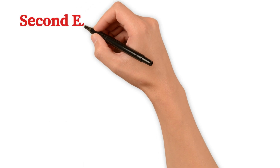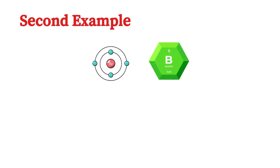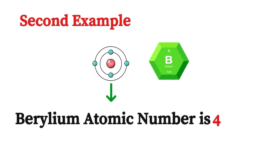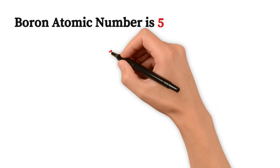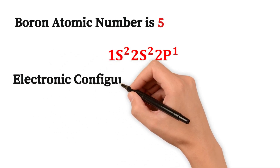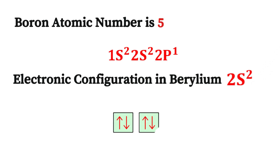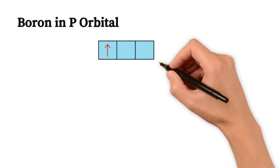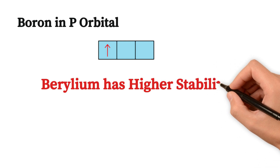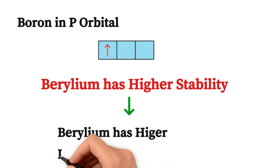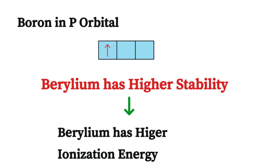The second example is beryllium and boron. Beryllium has atomic number 4 with configuration 1s2 2s2, whereas boron has atomic number 5 with configuration 1s2 2s2 2p1. In beryllium, the 2s sub-shell is completely filled, which is a stable configuration. In boron, the p orbital has only one electron. Therefore, beryllium has higher stability and higher ionization energy compared to boron.